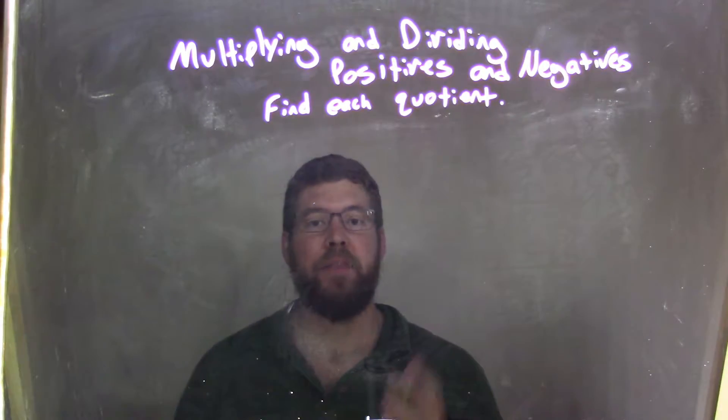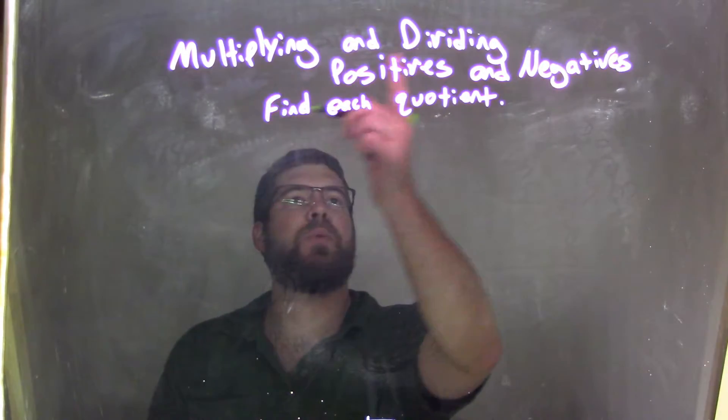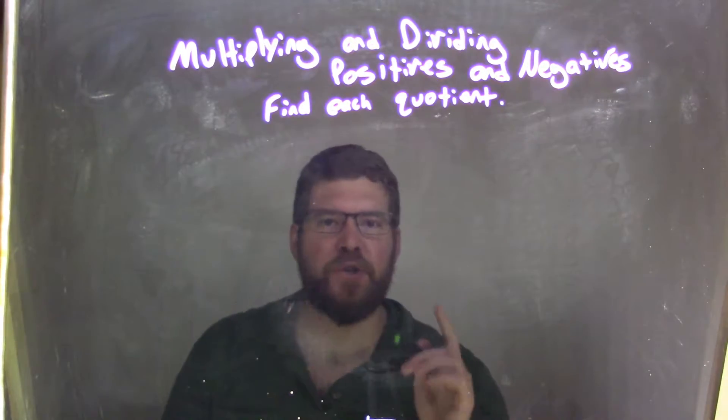Hi, I'm Sean Gannon, and this is Minute Math. Today we're going to learn about multiplying and dividing positive and negatives, and we want to find each quotient.